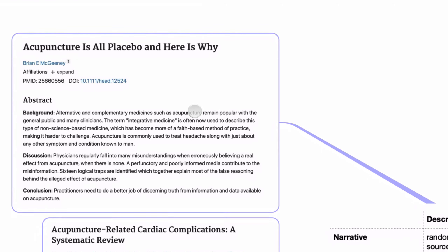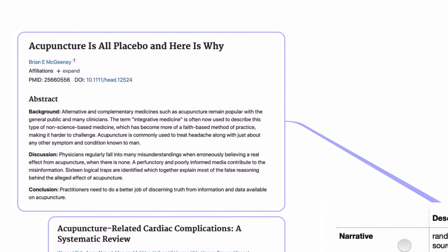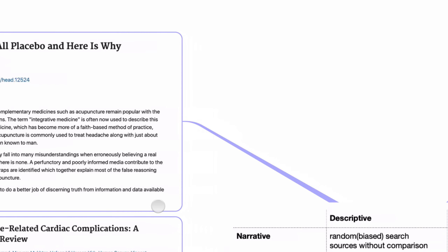This top-left quadrant is descriptive and narrative. For example, a study titled 'Acupuncture is all possible — here's why' — the author cooks a dish called acupuncture using studies chosen by their own decision. The conclusion might be: 'Practitioners need to do a better job of discerning truth from the information available on acupuncture.' This conclusion should not be used as evidence but as the author's opinion. That is the purpose of a descriptive and narrative study.